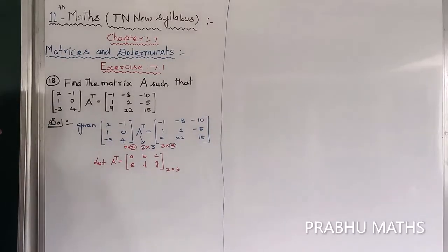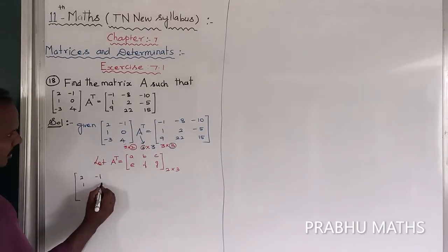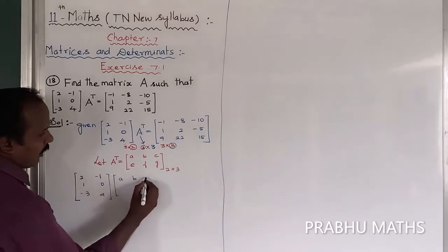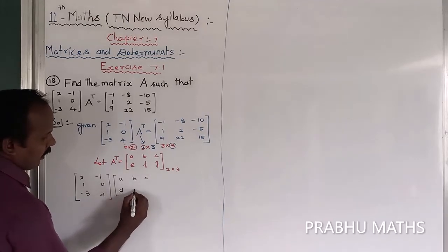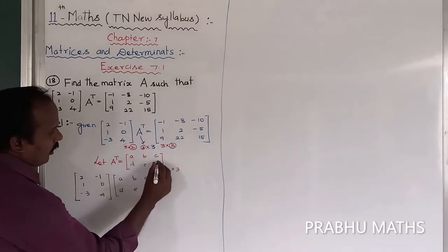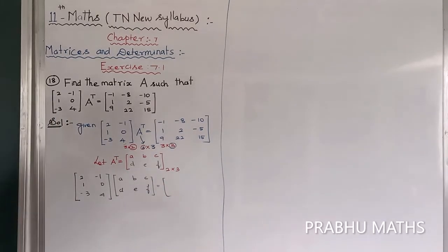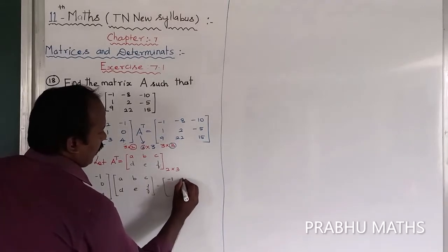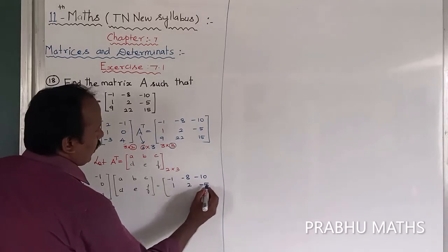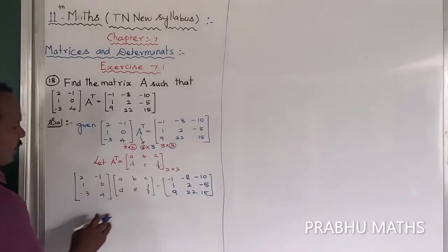The given matrix is: 2, -1, 1, 0, -3, 4. The 2×3 A-transpose matrix has entries A, B, C in the first row and D, E, F in the second row. The result matrix is: -1, -8, -10, 1, 2, -5, 9, 22, 15. Now we perform the matrix multiplication.